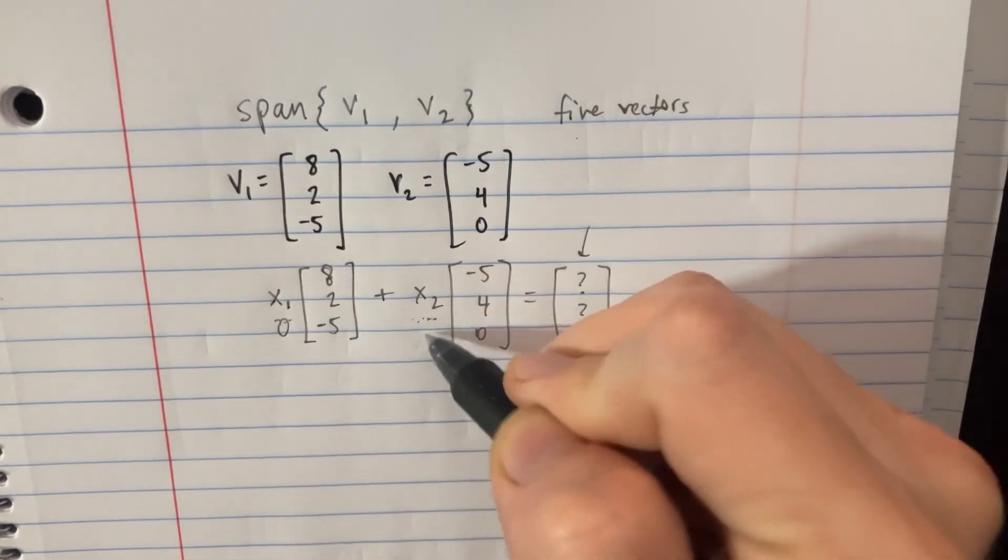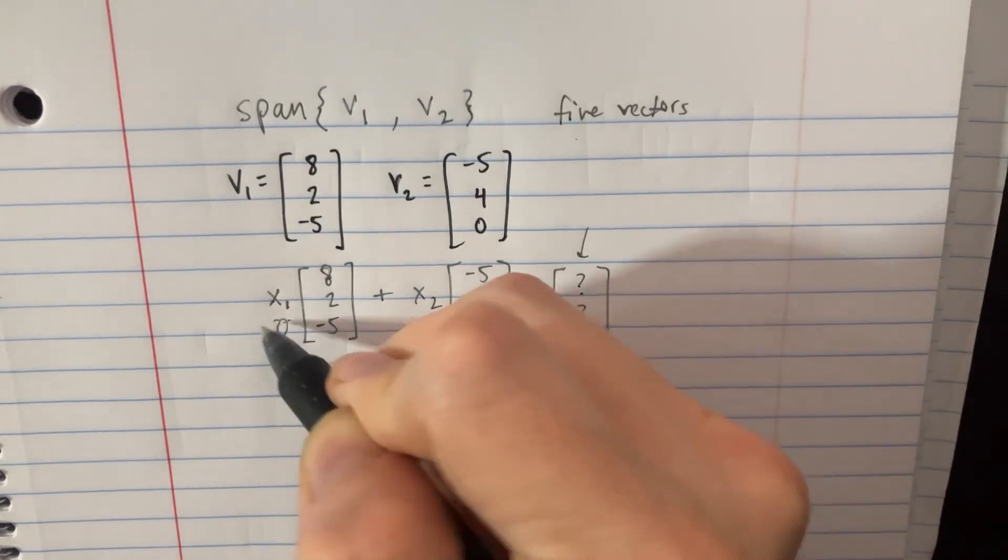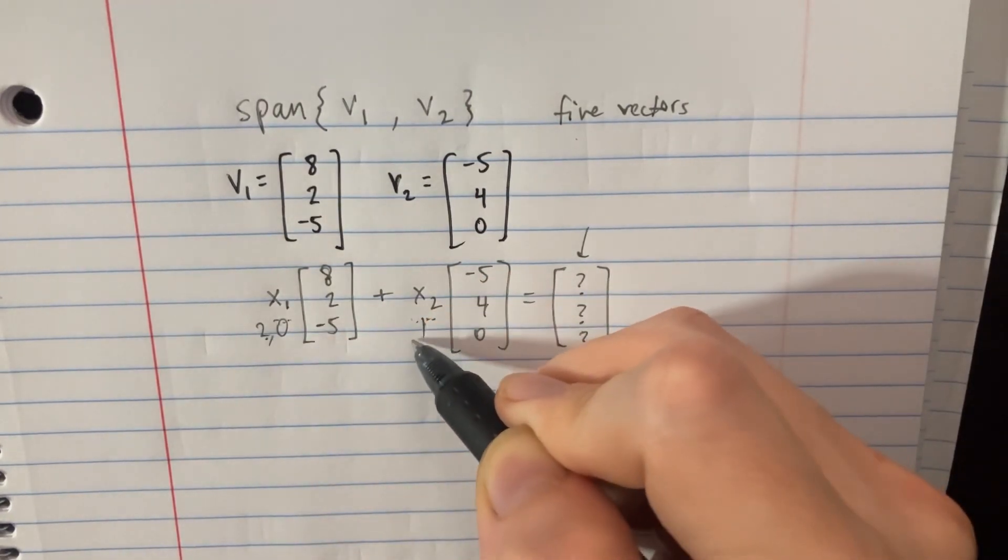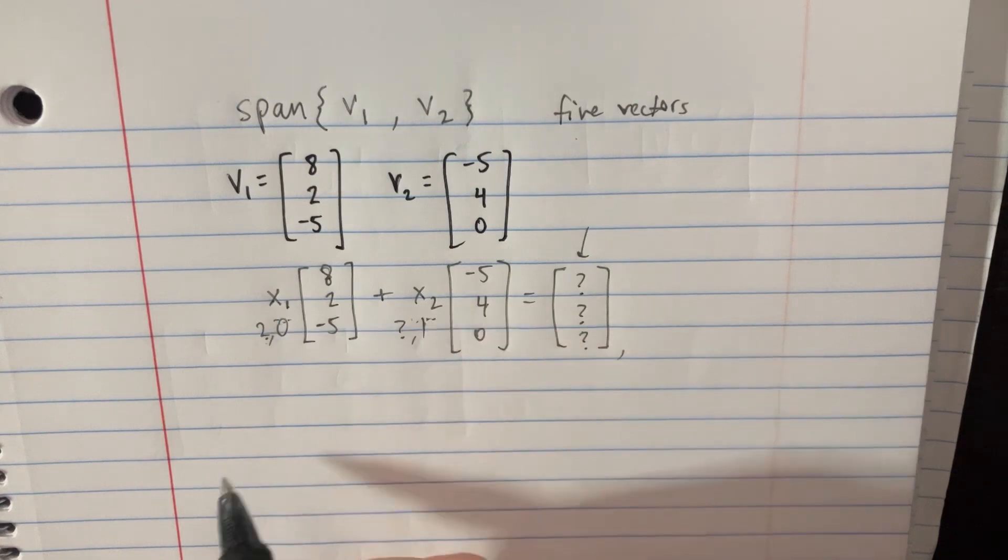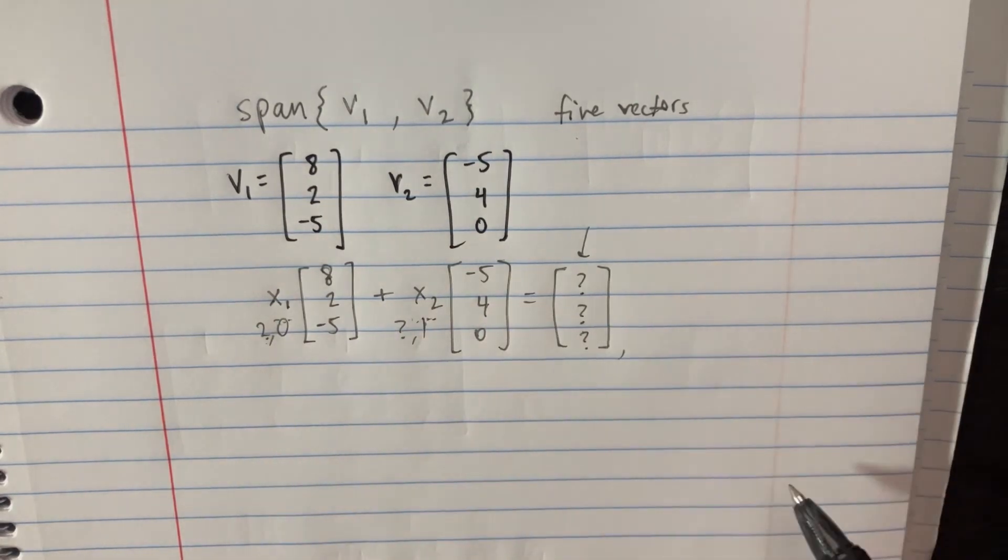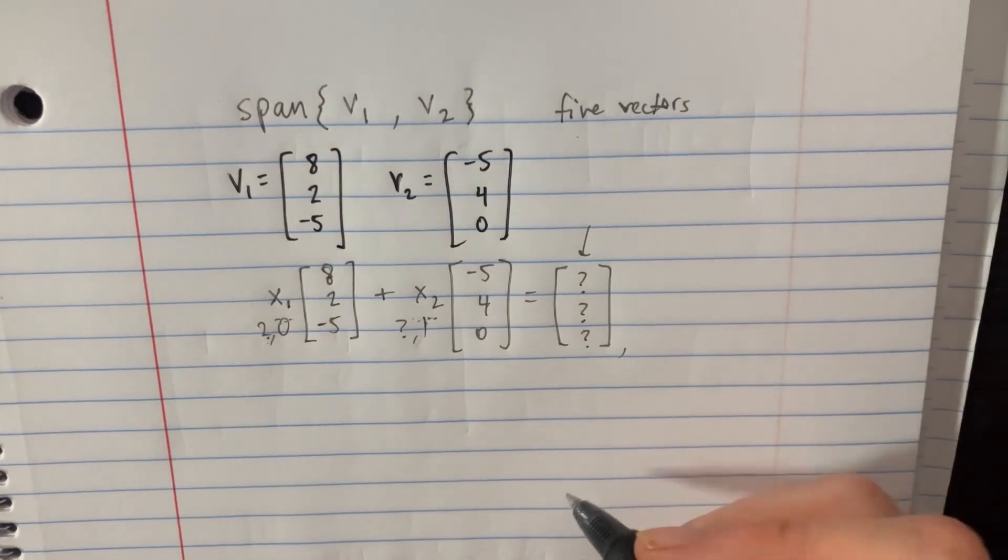This could be 0, it could be 1, you could have 2s or whatever. So you could literally have any kind of variables in front of these, and then you'll have a whole bunch of different answers. So let's just start plugging in some numbers.